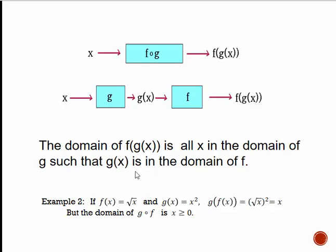Here's an example where this can catch you. If f(x) = √x and g(x) = x², then g(f(x)) means taking g's formula, x², and putting f's formula, √x, into it — giving √(x²). As long as you're in the domain, √(x²) = x, so g∘f(x) = x. But the domain is not all real numbers — it's really √(x²) simplified, so x must be ≥ 0.